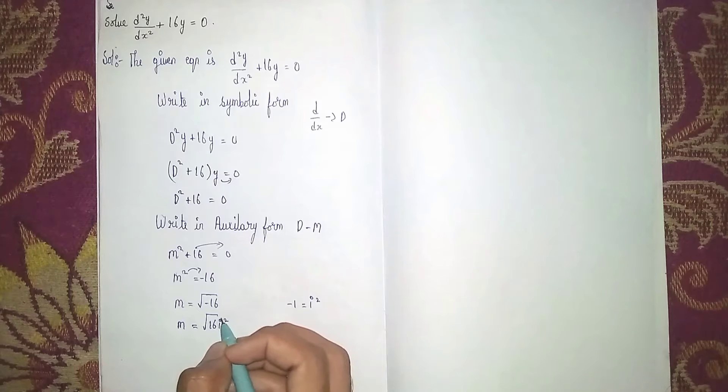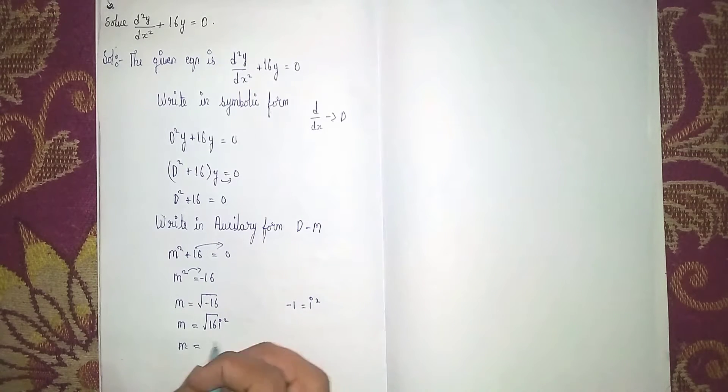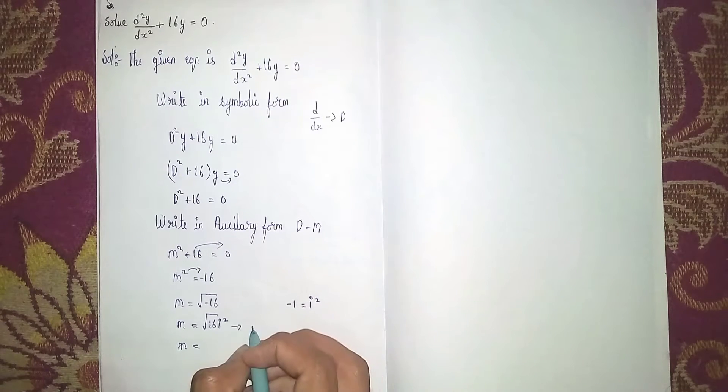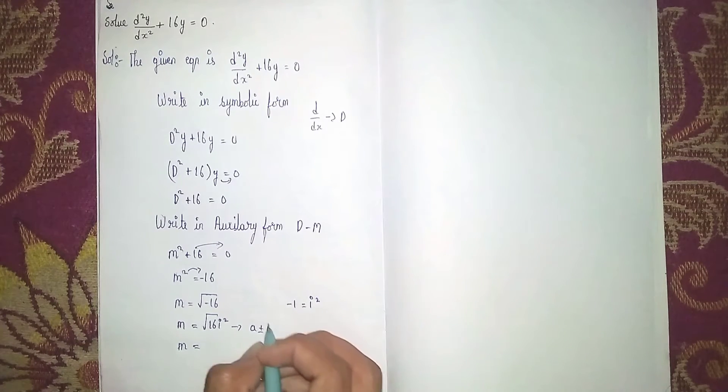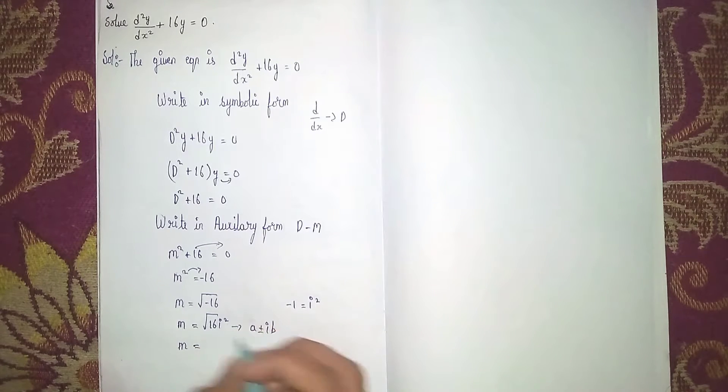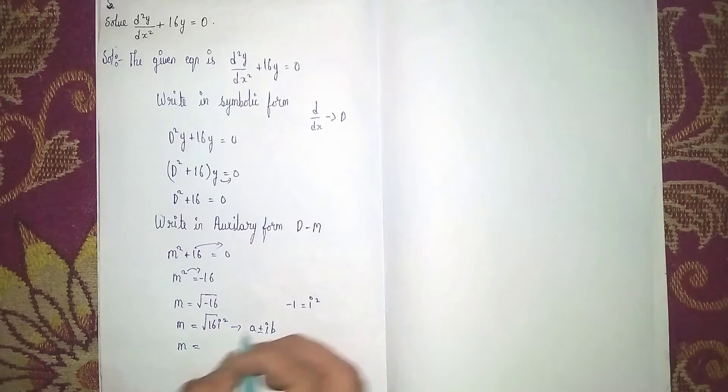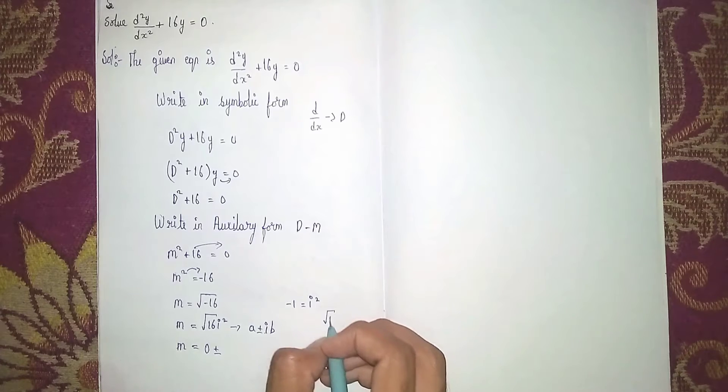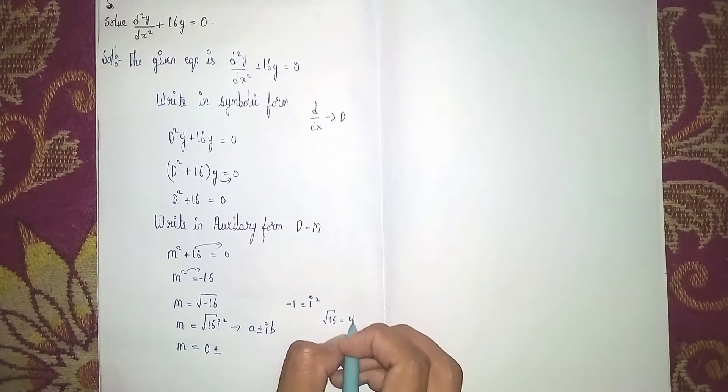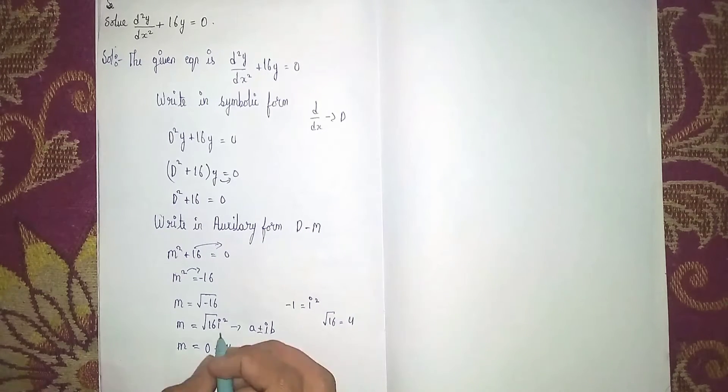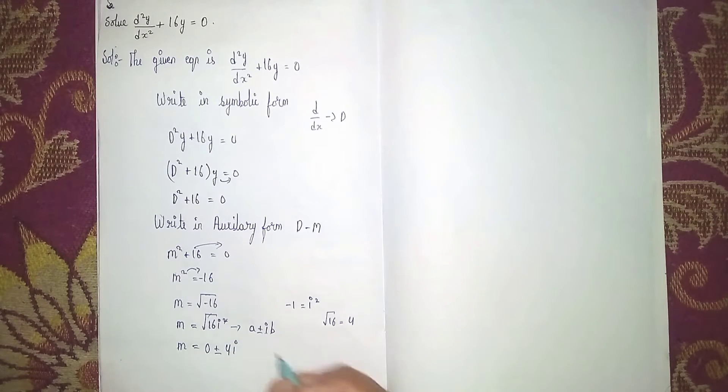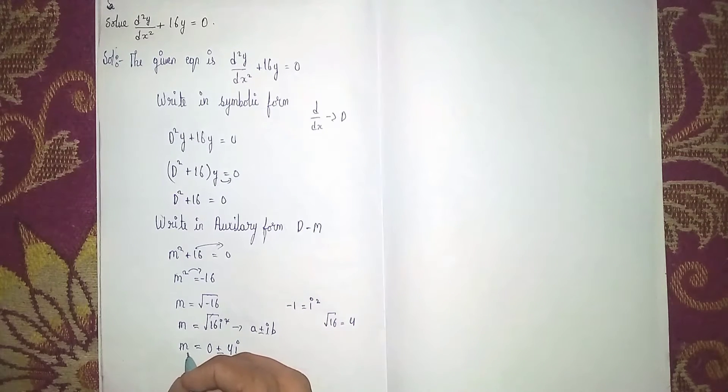Now take the root here. It is in the form of a plus or minus ib. This is b and i, so a is nothing. I'm taking a as 0. So 0 plus or minus under root 16. 16 is equal to 4, so it becomes 4. i squared, square and root get cancelled, so it becomes 4i or i4 also. Now our roots are 0 plus or minus 4i.